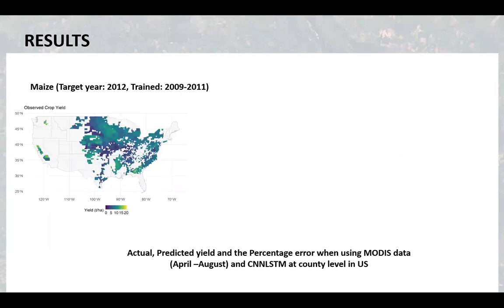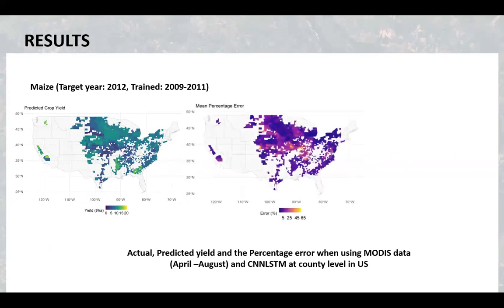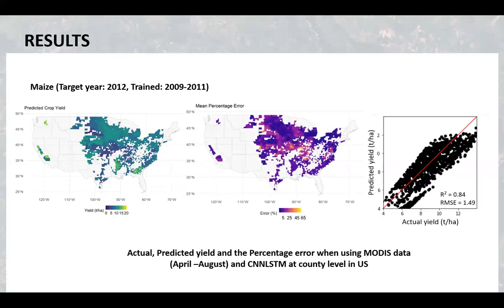Let's look at another year when the target year was 2012 and the model was trained based on data from 2009 to 2011. Here the error is slightly higher, but we have to take into account that 2012 was an exceptional drought year in the study area.